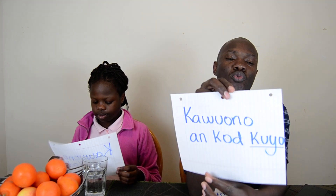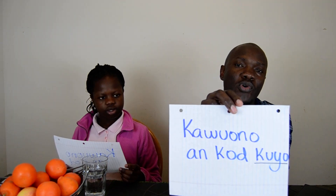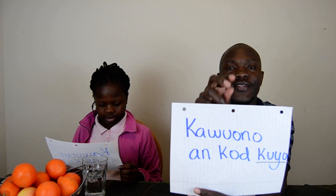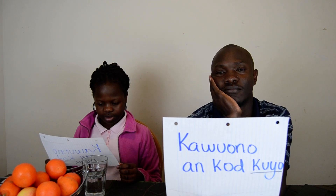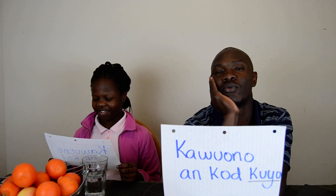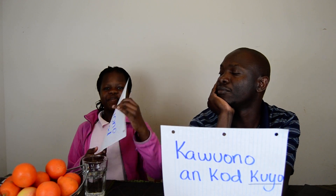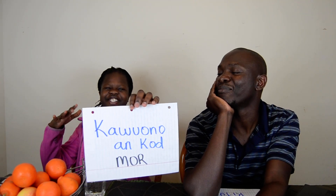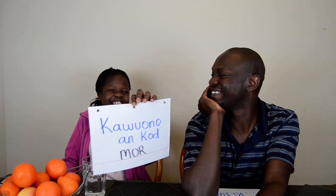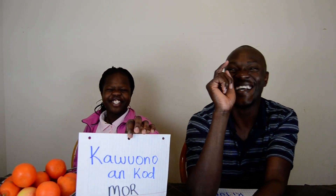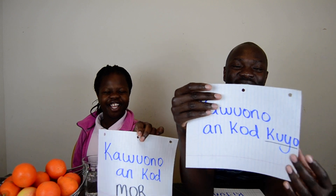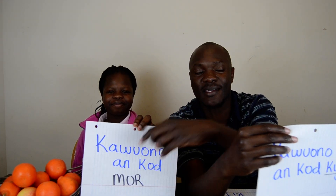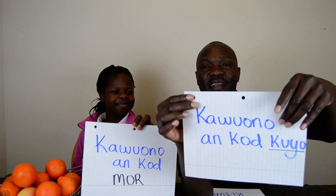Kawono, I'm called Kuyo. Kuyo is sad. Today I'm very sad, as you can see. Kawono, I'm called Kuyo. Nikki: Kawono, I'm called Mor. Mor means happy, as you can see — I'm happy. So sad is kuyo, happy is mor. Today I'm very happy. Today I'm very sad.